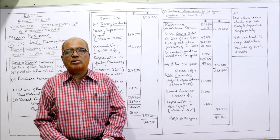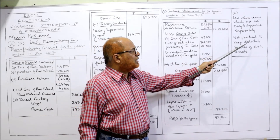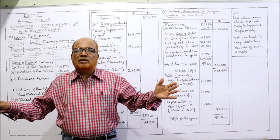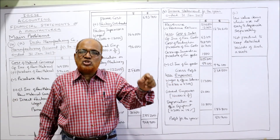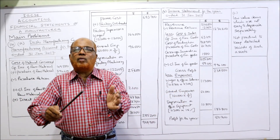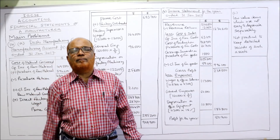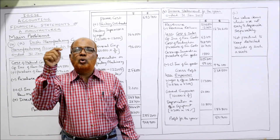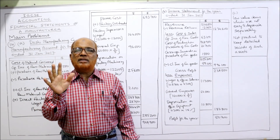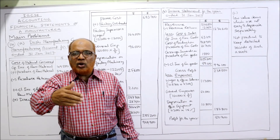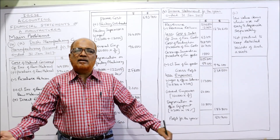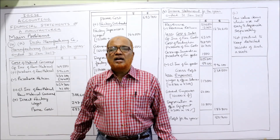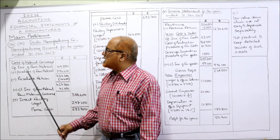Secondly, it is not practical to keep a detailed record of such assets. There are so many small-value items that it is difficult to keep a record of each one — that's why we add up all small-value items and revalue at the end of the year, rather than applying reducing balance or straight-line method. The appropriate method for loose tools is the revaluation method: at the end of each year we find the closing value, compare it to the opening value, and the difference is the depreciation. This concludes problem number 14.